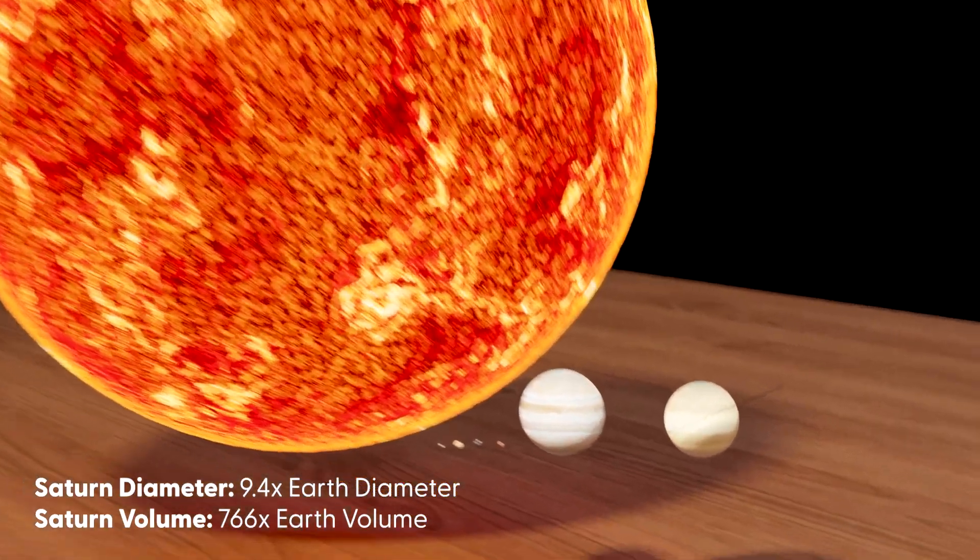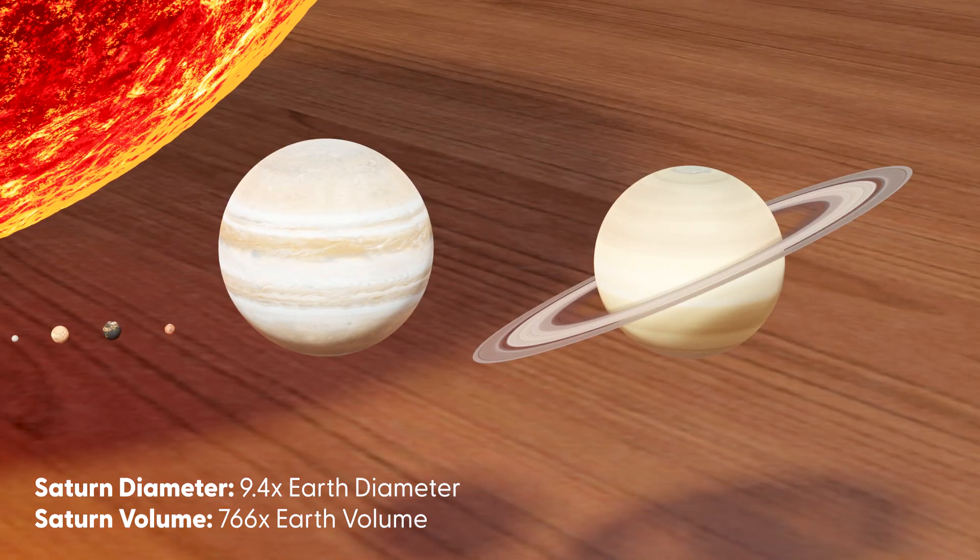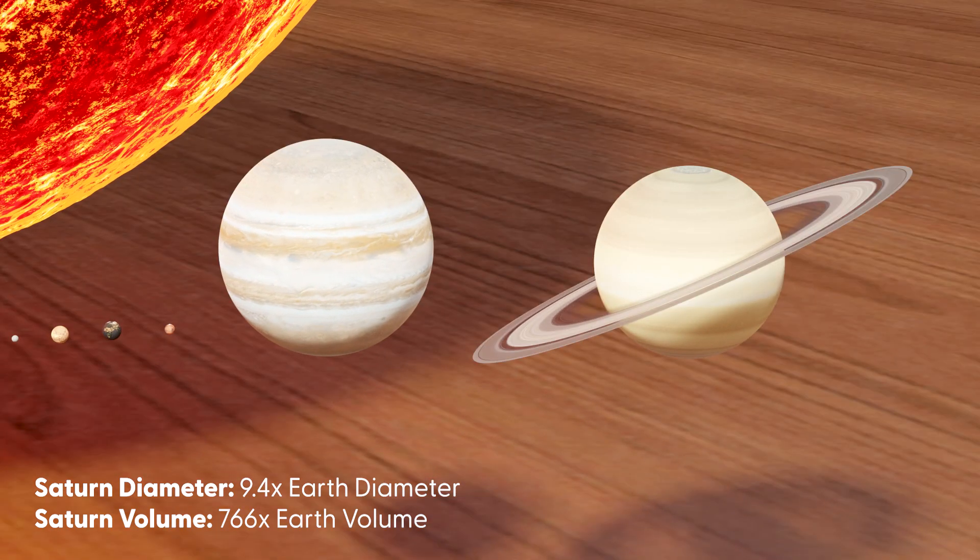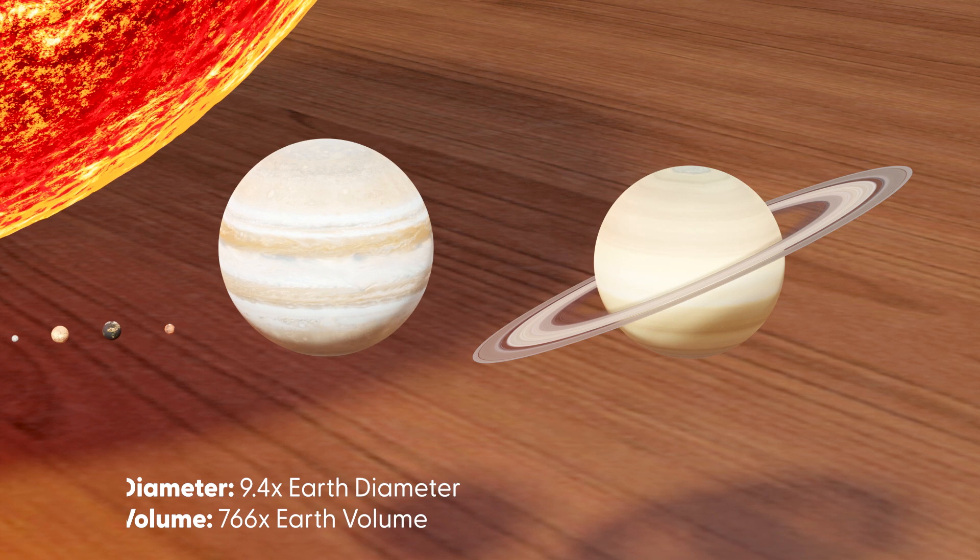Saturn is slightly smaller than Jupiter, with a diameter of 9.4 times Earth's and a volume of 766 times Earth.